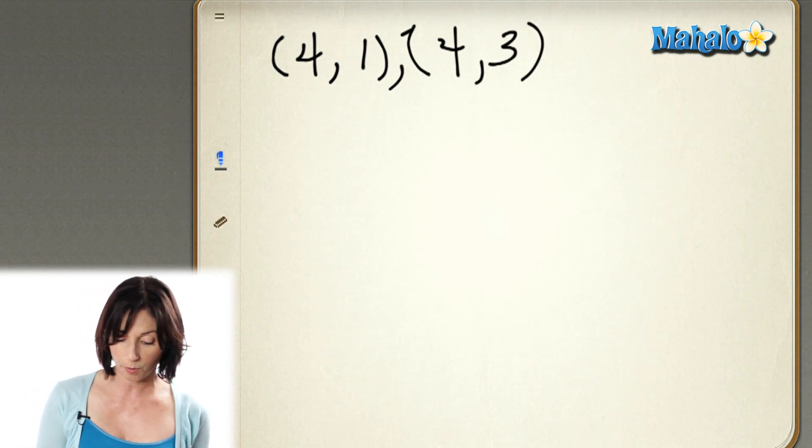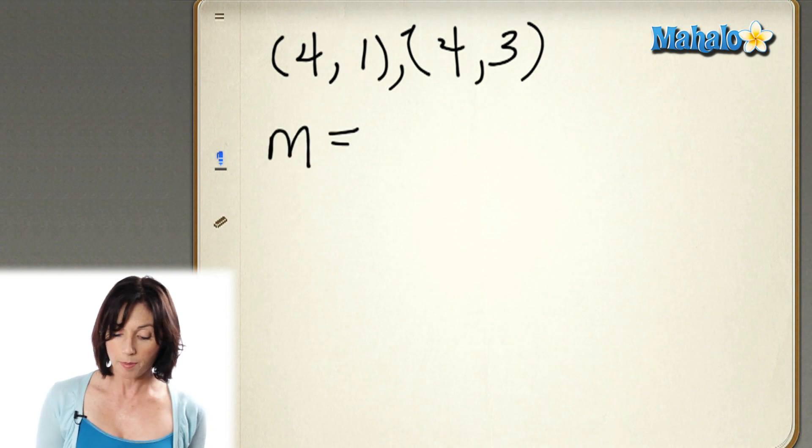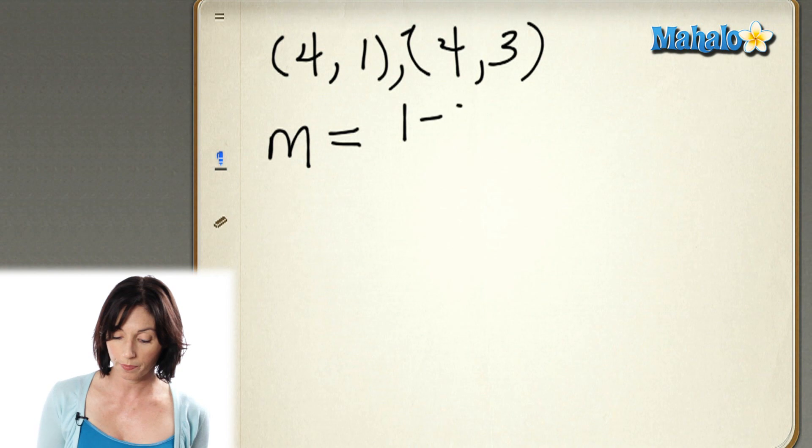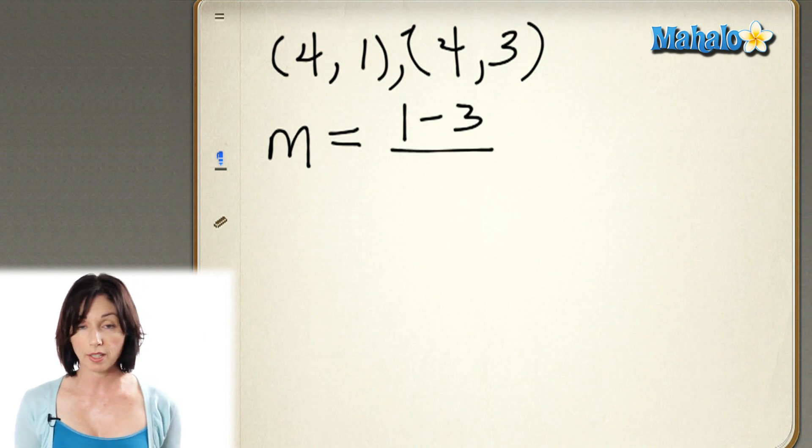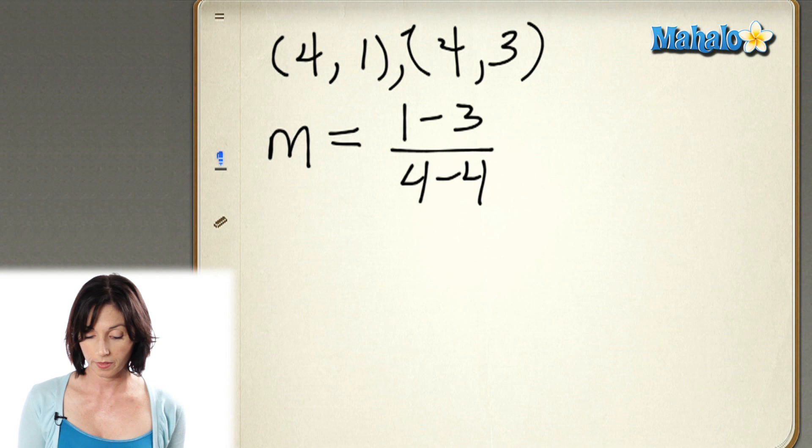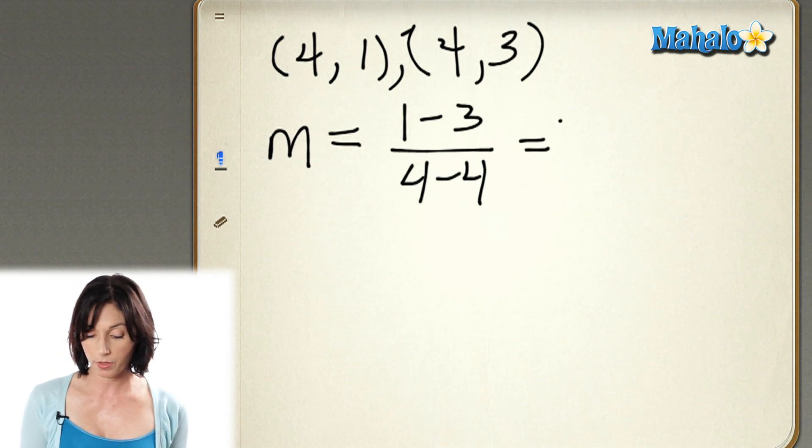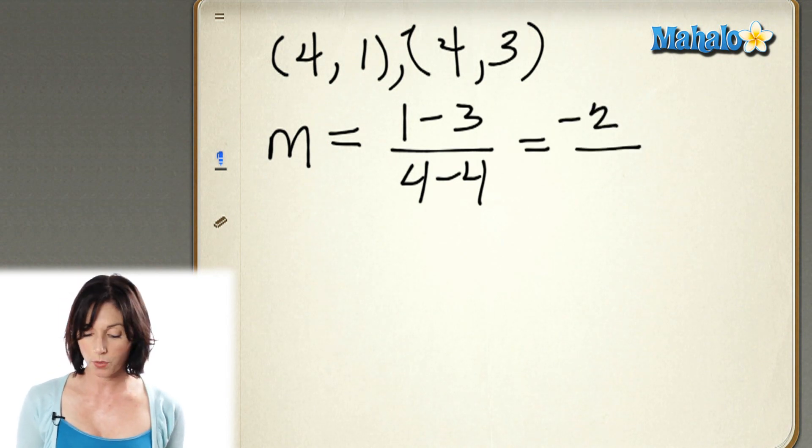Again, I'm just going to calculate the slope as normal. I'm going to take the difference in my y-coordinates, so 1 minus 3, over the difference in the x-coordinates, 4 minus 4. 1 minus 3 is negative 2, and 4 minus 4 is 0.